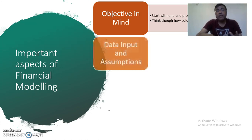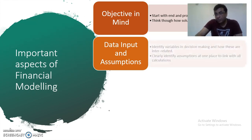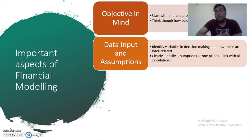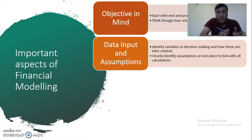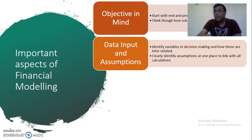The next step is to collect data inputs and make assumptions. All the variables needed for decision making, which we identified in the first step, need to be collected. We also need to clearly state all the assumptions we are making so that we can separate what is fact and what is assumption when evaluating our decisions. All assumptions should be put in one place — one sheet in the Excel file — so you can review them all at once instead of going through the whole model one by one.